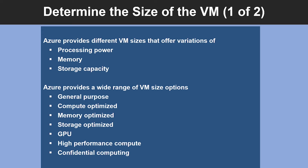Another key thing to determine is the size of the VM. Once you have the name and the location set, you need to decide on the size of your virtual machine. Rather than specifying processing power, memory and storage capacity independently, Azure provides different VM sizes that offer variations of these elements. Azure provides a wide range of VM size options, allowing you to select the appropriate mix of compute, memory and storage. The best way to determine the appropriate VM size is to consider the type of workload your VM needs to run, and based on the workload, you choose from a subset of available VM sizes.